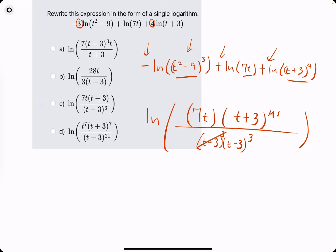So we are looking for 7t, just a single (t + 3) on top, and then (t - 3)³ on the bottom, all inside of a natural log. So 7t, (t + 3), (t - 3)³. It looks like option C. And we're done.